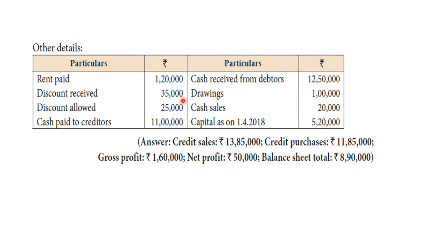Now we will prepare the trading and profit and loss account details. To do so, we need to find credit sales and credit purchases. We will find this by preparing the total debtors account and the total creditors account.